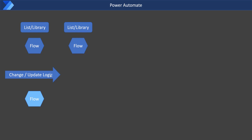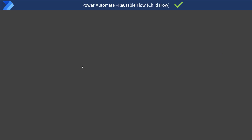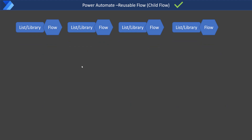Now the same situation: a change comes in. What do I do? I update two flows this time because I have two similar flows running on two separate libraries. If I need to make a change, I need to make it in both places. What if I have many lists and libraries using the same logic flow? Even a very small change means I need to go and update each and every flow and republish them. This can be a nightmare for the flow maker.